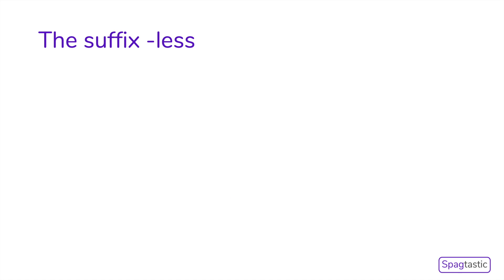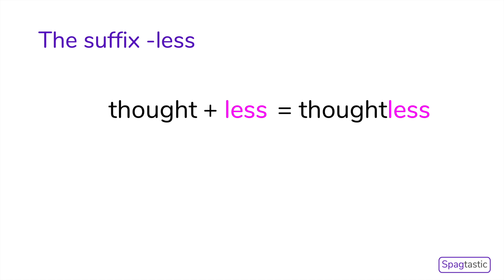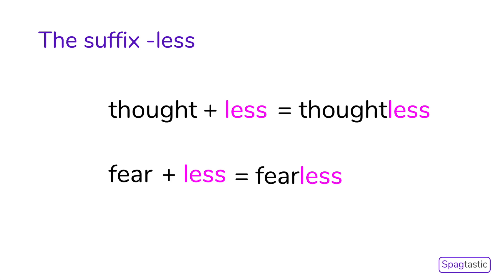Here are some more examples. If the root word is thought and we add the suffix -less, we make the adjective thoughtless, which means without thought. If the root word is fear and we add the suffix -less, we make the adjective fearless, which means without fear.